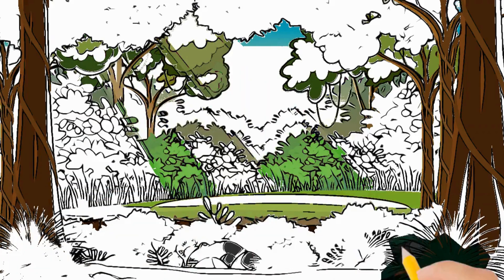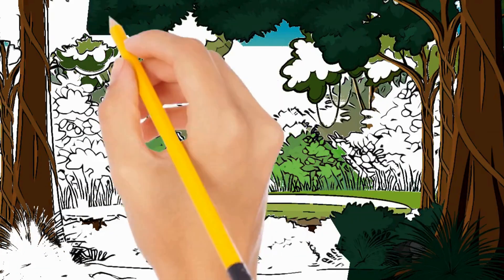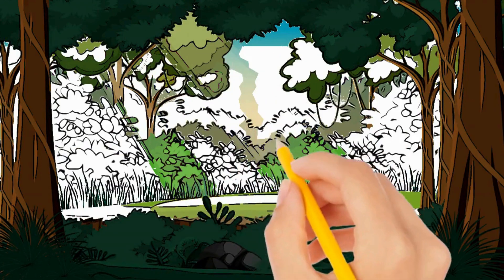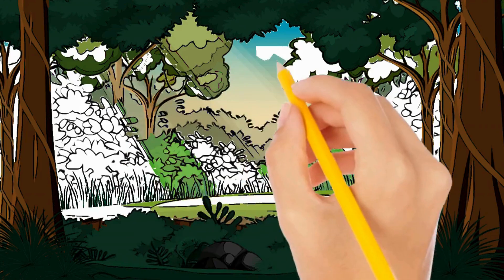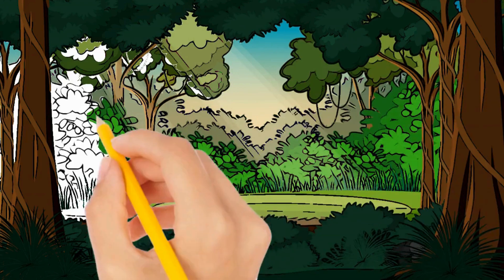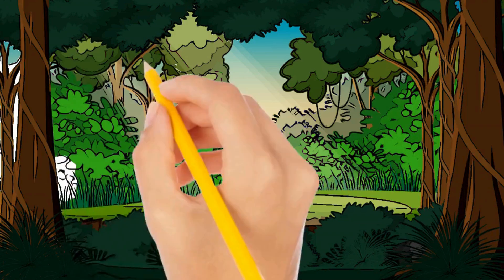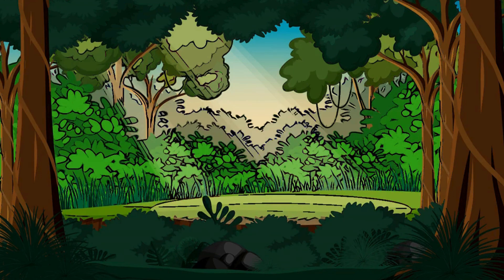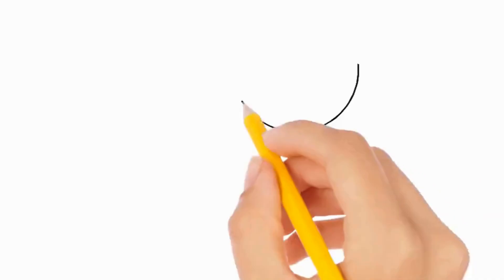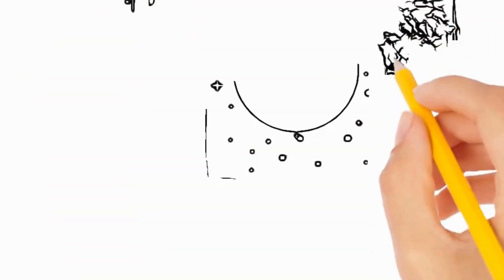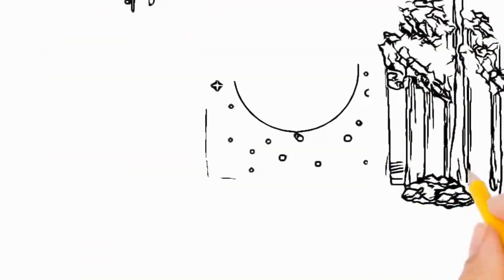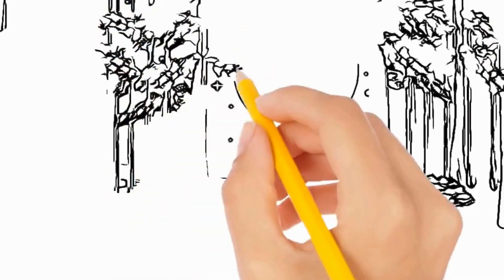Intrigued by its potential, he carefully planted it in the richest patch of earth he could find, nurturing it with water, sunlight, and boundless determination. Days turned into weeks, and weeks into months, as Ethan watched over the tiny seed with unwavering hope. Despite the doubts of others and the occasional setback, he continued to tend to the plant with care and patience, never losing faith in its potential to flourish.